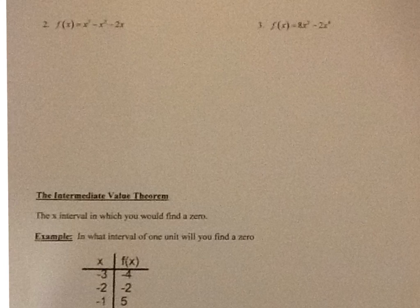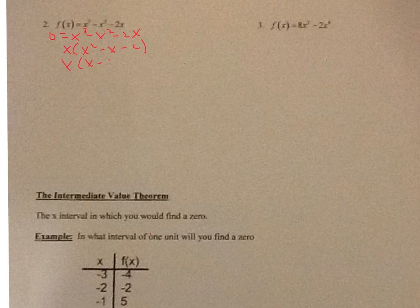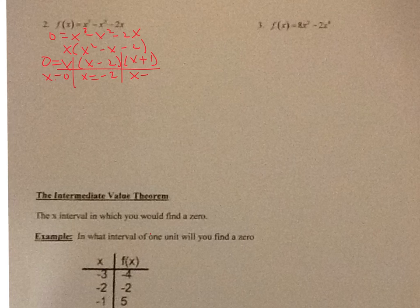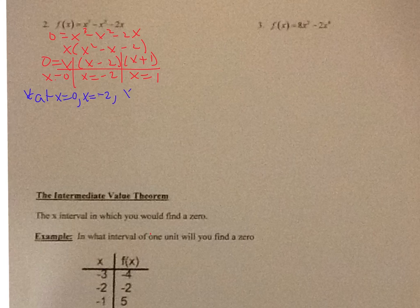Let's look at number 2: f(x) = x³ - x² - 2x. Setting 0 equal, the GCF is x, giving x(x² - x - 2), which factors to x(x-2)(x+1). So zeros are x equals 0, x equals 2, and x equals negative 1. All three factors have an odd exponent — exponent of 1 — so at x equals 0, x equals negative 2, and x equals 1, the multiplicity is odd.